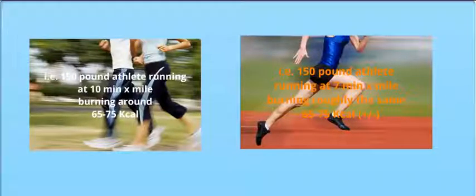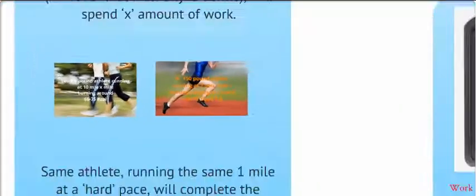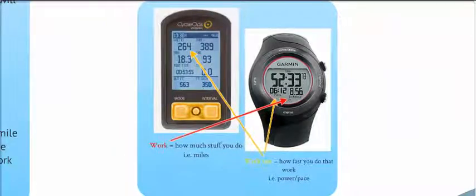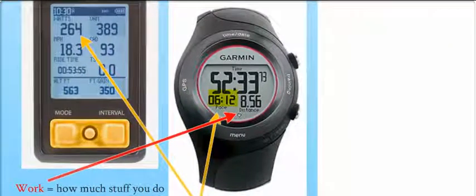Hence, though it takes roughly the same amount of work, the difference here is the speed, how fast the athlete is completing that mile. Therefore, work is how much stuff you do, example miles, and work rate is how fast you do that work.